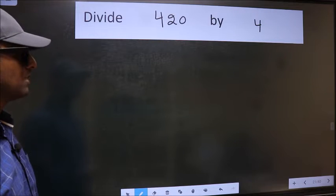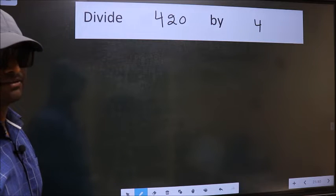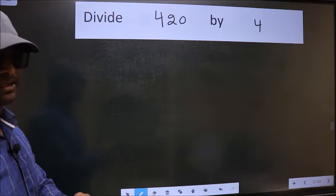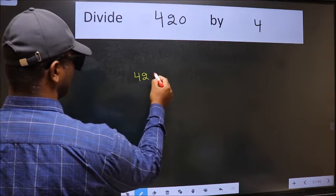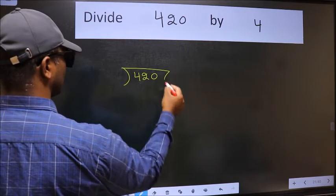Divide 420 by 4. To do this division, we should frame it in this way. 420 here, 4 here.